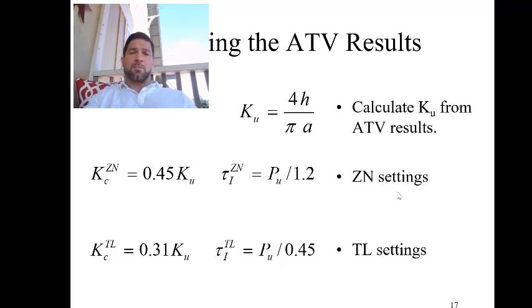There's two different types of settings that can be used with this. Generally we have what's called ZN settings. These settings are typically applied for systems where you want a little bit more of an aggressive controller tuning, so maybe a quarter amplitude to a fifth amplitude decay controller settings. We can also use the TL which is Tyreus-Luyben settings. And these are typically used for a more conservatively tuned controller where you don't want the system to respond as fast, because potentially maybe it's a non-linear system or you expect large disturbances that can affect the process.